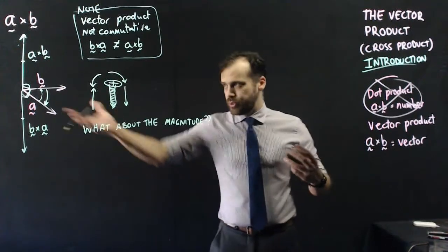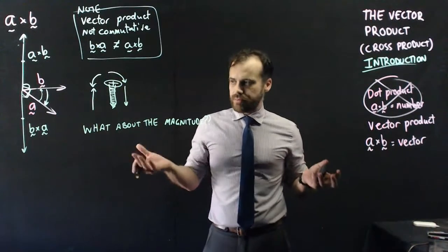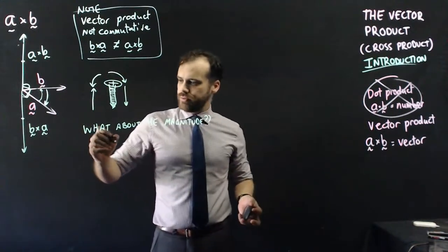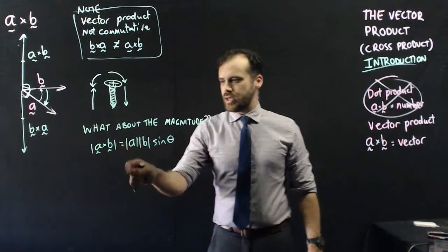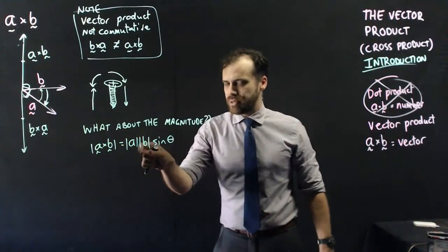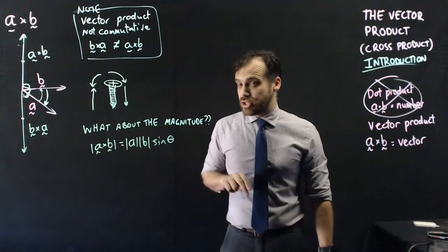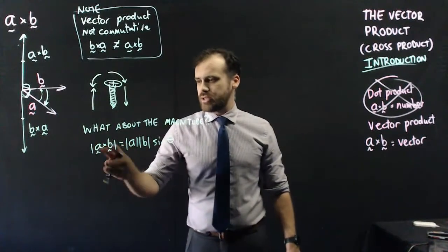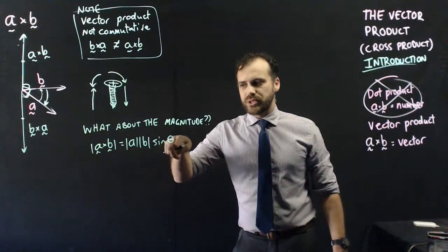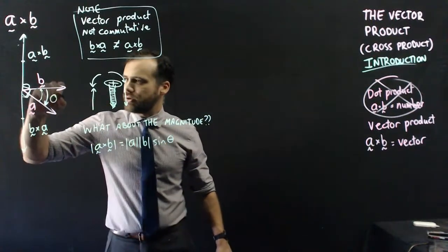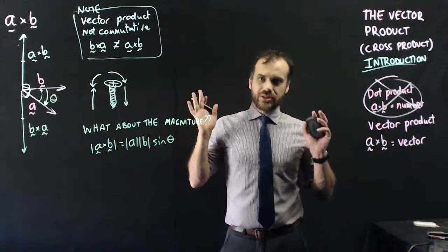Now what about the magnitude? The magnitude of A times B is equal to the magnitude of A times the magnitude of B times sine theta, where theta is the angle between them. This calculation doesn't change whether it's A times B or B times A, because we're dealing with magnitudes and the angle between them, and none of those things change.